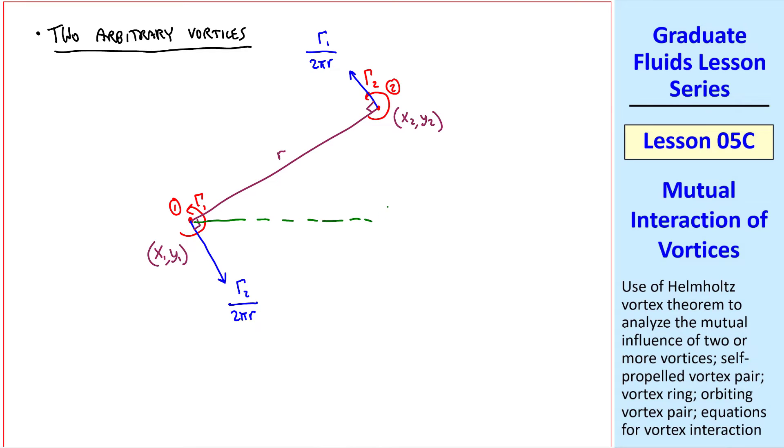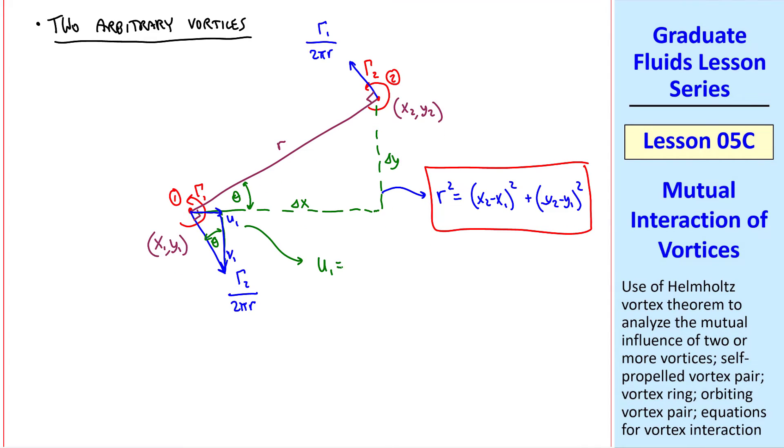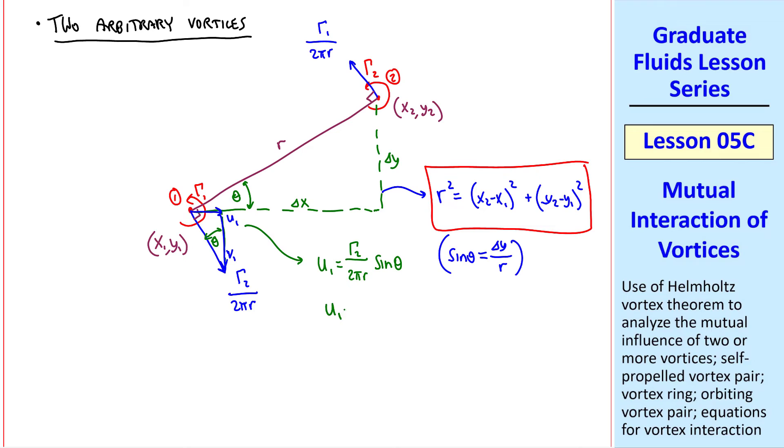We can do a little bit of trig here, call this distance delta y, and this distance delta x, and this angle theta. This angle will also be theta, and we can split this velocity into components u_1 and v_1. We also note that r squared is x_2 minus x_1 squared plus y_2 minus y_1 squared. Again, a little bit of trig, u_1 is gamma_2 over 2 pi r, which is this long segment, times sine theta. But sine theta is delta y over r from this big triangle, so u_1 is gamma_2 over 2 pi delta y over r squared.